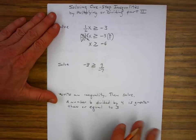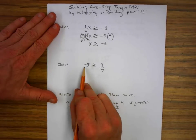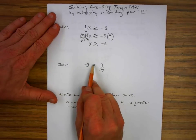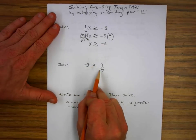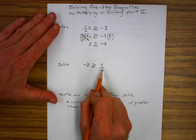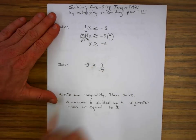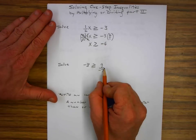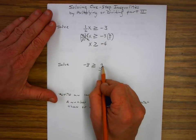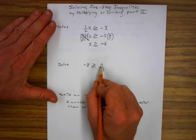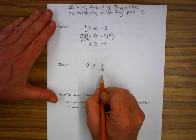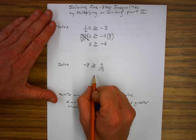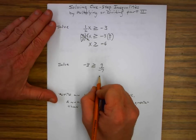I want to solve negative three is greater than or equal to g over negative seven. I want to isolate the variable g by multiplying by the reciprocal of one over negative seven.